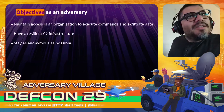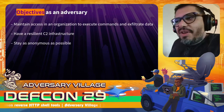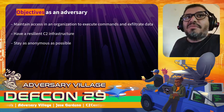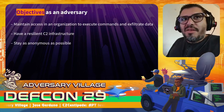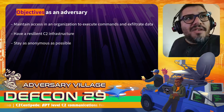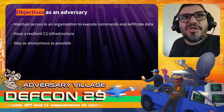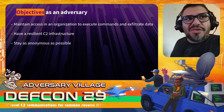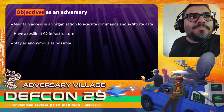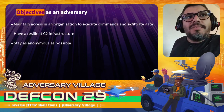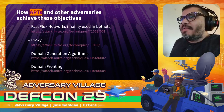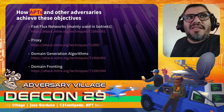The basic objectives as an adversary — especially a red team adversary — are to maintain access in the organization, to have interactive command with hosts inside the organization, and maybe exfiltrate some data. You also want a resilient command and control infrastructure, because the blue team may try to block you or bring down your infrastructure. And how can you do this while staying as anonymous as possible?